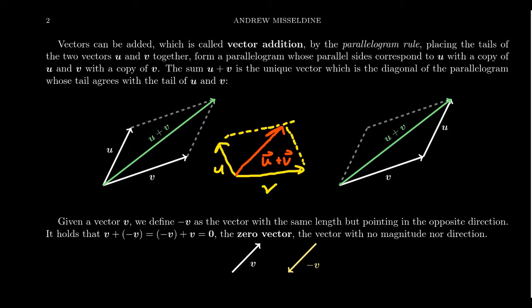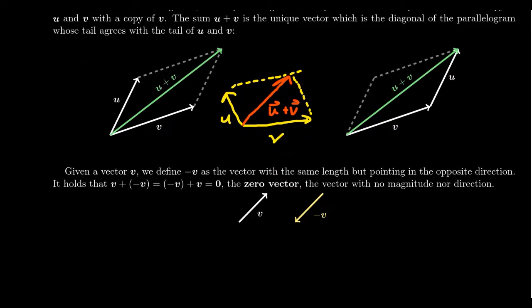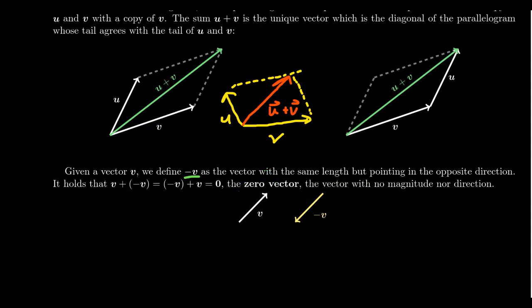It's also important to represent the negative of a vector. Given a vector V, we define −V as the vector with the same magnitude but pointing in the opposite direction. If you take a vector plus its inverse, you get the zero vector — the vector with no magnitude or direction, essentially no length, like a point. If you apply no force to an object, it doesn't move.